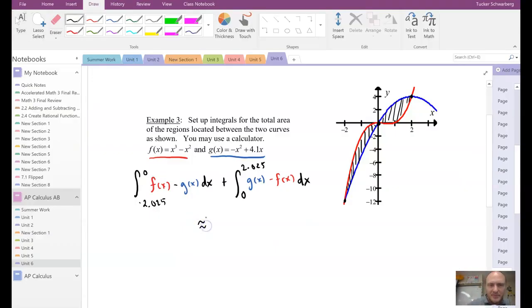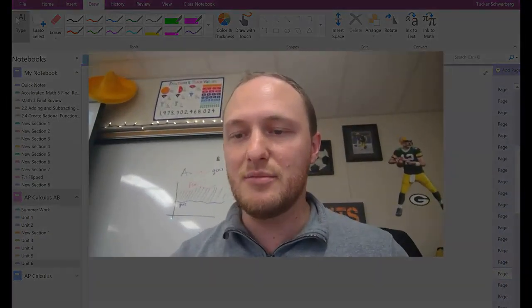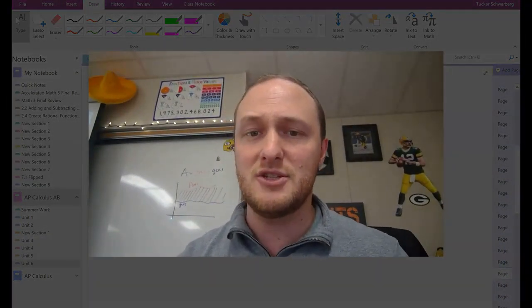We'll enter and hopefully our answer will pop up. It does, hey hey, 8.405. So this is, well actually we're going to round, so approximately 8.405. That is how you utilize a calculator to calculate area between curves. Catch you next time, peace.